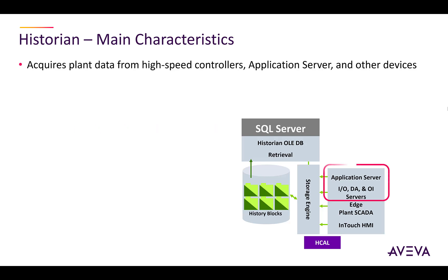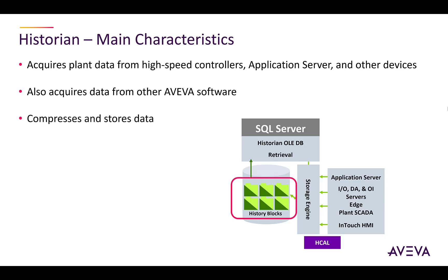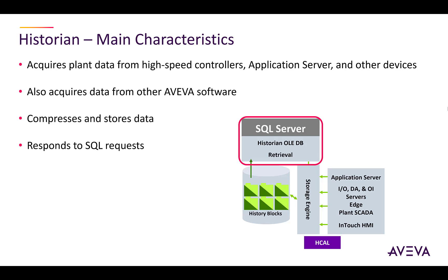Historian acquires plant data from high-speed IO servers, DA servers, OI servers, application server, and other devices. It also acquires data from other Aviva software such as Edge, Plant SCADA, and InTouch HMI. It compresses and stores the data and responds to SQL requests for plant data.